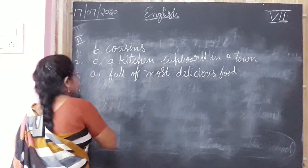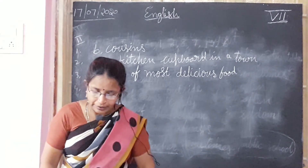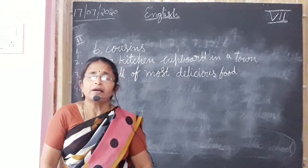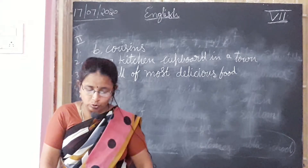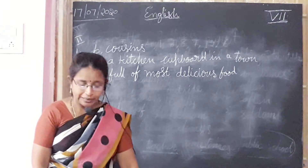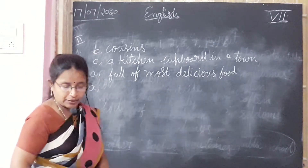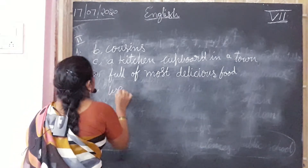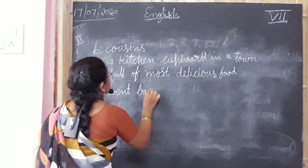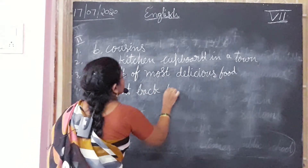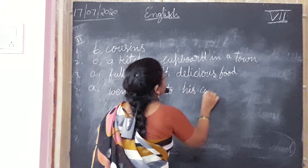Now come to fourth one. At the end of the story, the country mouse — the country mouse went back to his country. The country mouse did not stay in the town; he went back to his own country. So the answer is: went back to his country. These are the correct choices.